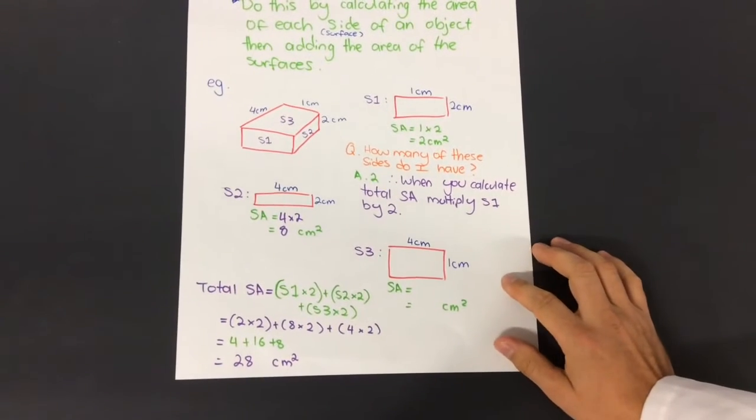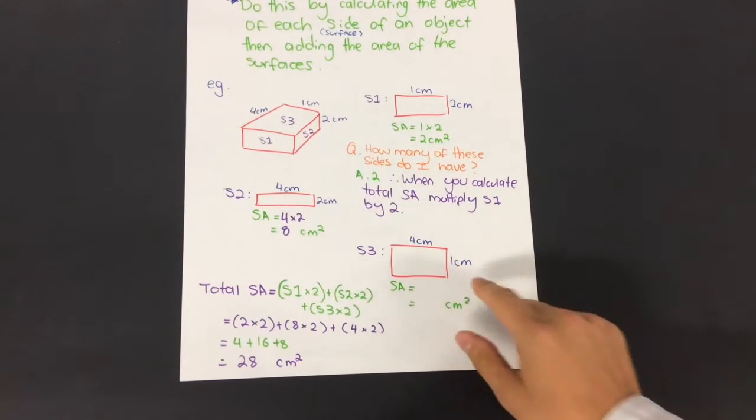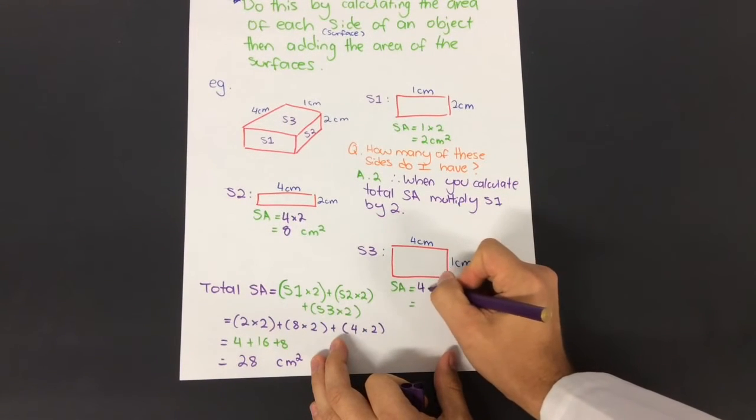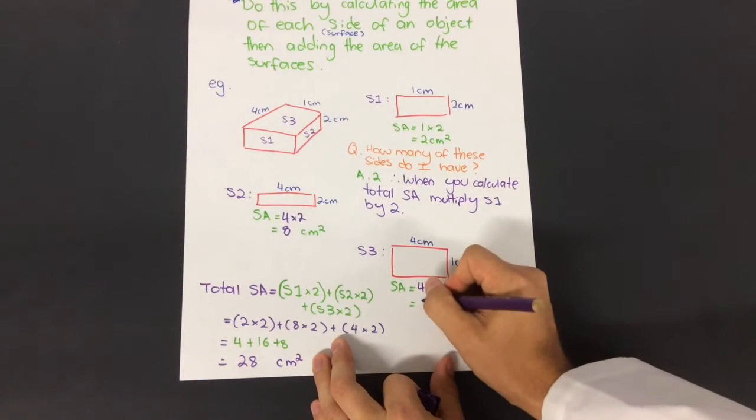Now let's look at our third surface here. That's the top and the bottom one, that's four centimeters by one centimeter. You write that like this: four times one. Multiply that together—that's a pretty simple one—gives me four centimeters squared.